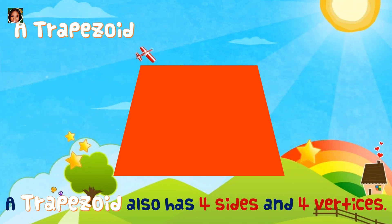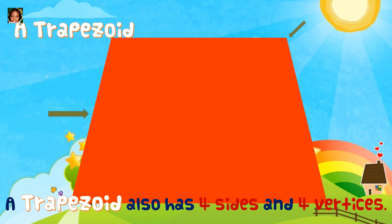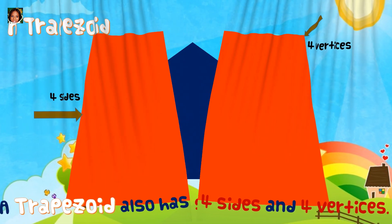Trapezoid. A trapezoid also has four sides and four vertices.